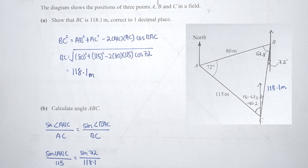Question 7: the graph is tricky — it involves bearing with a combination of cosine rule and sine rule, so I illustrate them separately. For part A, to show BC is 118.1 meters, we use the cosine rule since we have the angle of 72 degrees and sides of 80m and 115m. Substituting into the cosine rule gives 118.1.